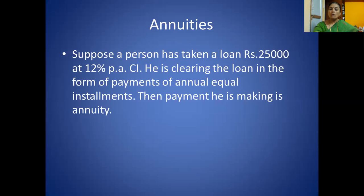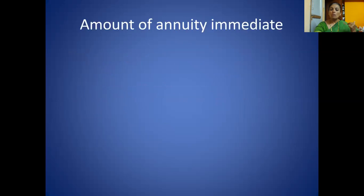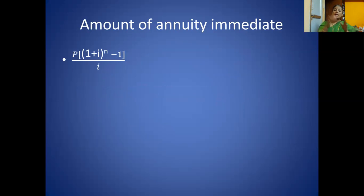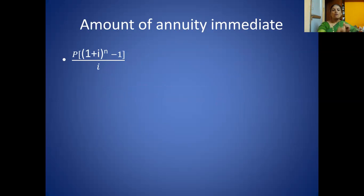While considering annuity there are two types of formula. In one case we calculate the amount of annuity immediate, and in another case we calculate the annuity amount. The formula for calculating amount of annuity immediate is: P multiplied by [(1 + i)^n − 1] divided by i.